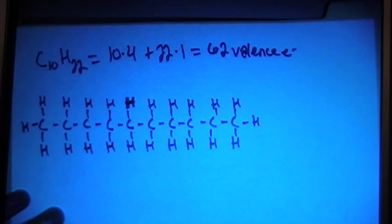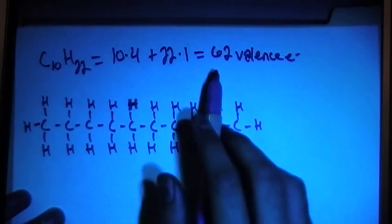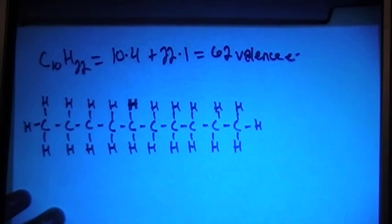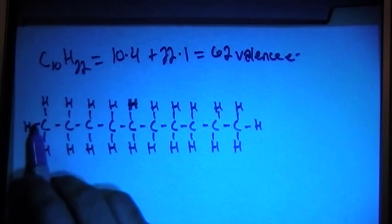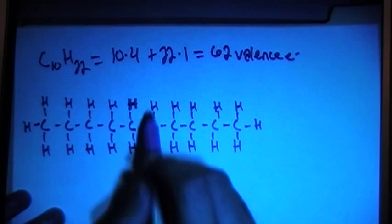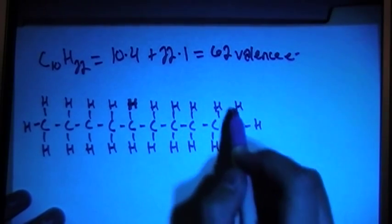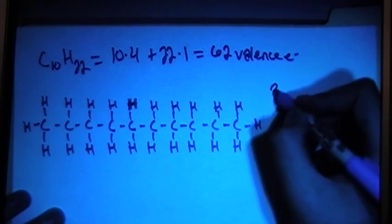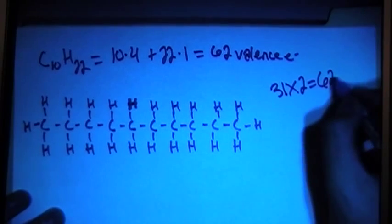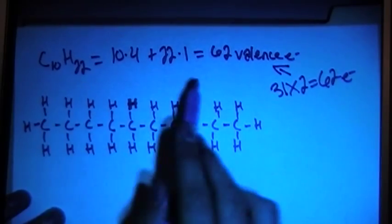Okay, so that should be it, we can go ahead and count off the bonds real quick to make sure that all of the electrons brought in have been used in this bond making process. 31 bonds each with 2 electrons is going to give us 62 electrons, which is exactly what we brought in based on the first calculation.